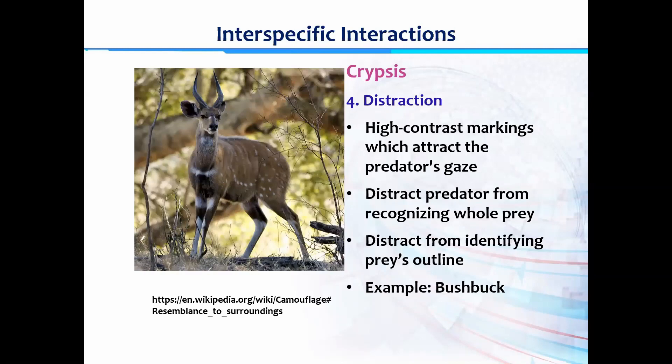Distraction is another adaptation in crypsis. In the example of the bushbuck, there are white markings on the legs, neck, and body. These significant markings serve as a distraction for the predator — instead of focusing on the prey, the predator is distracted by the markings, making it hard to identify the prey's outline and protecting the bushbuck.